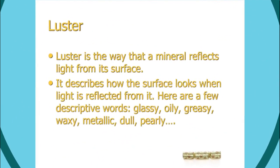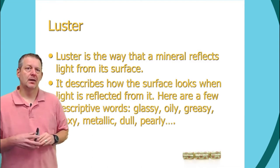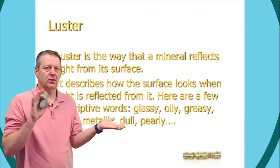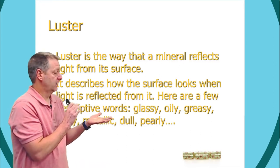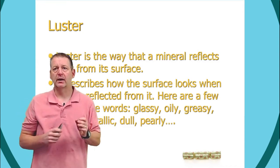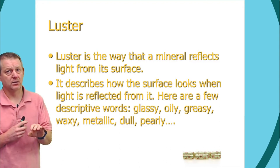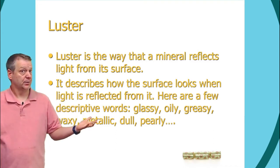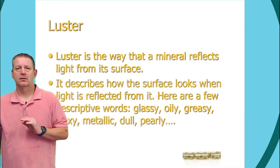Luster is the way a mineral reflects light. Different surfaces reflect light differently — a dull surface looks dull, a shiny surface looks glassy, and a metallic surface looks metallic. There are many types of luster: glassy, oily, greasy, waxy, metallic, dull, and pearly. Let's look at some examples.